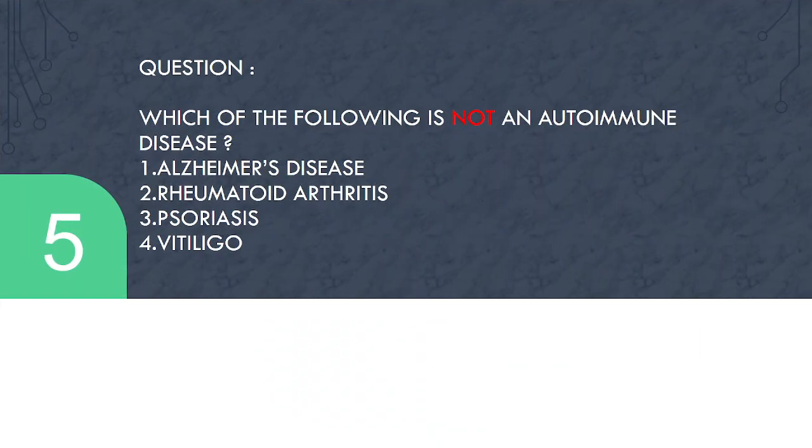Next question, which of the following is not an autoimmune disease? Let's look carefully. Alzheimer's, rheumatoid arthritis, psoriasis, or vitiligo? The answer is Alzheimer's.